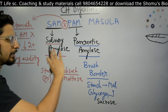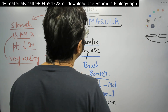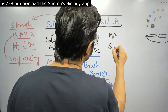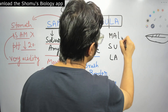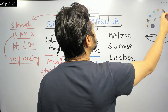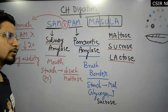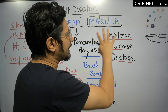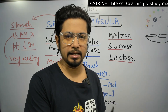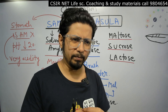Finally, when all polysaccharides are converted to disaccharides, the final digestion of carbohydrates takes place in the small intestine. This is where MASULA comes in. MA stands for Maltose, SU stands for Sucrose, and LA stands for Lactose. These are all disaccharides. Maltose and sucrose are produced from starch/glycogen digestion, and if you consume milk or milk products, lactose is present too.